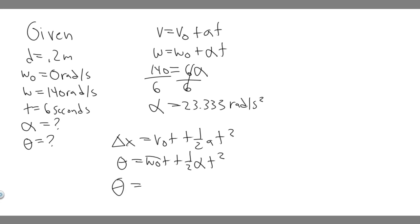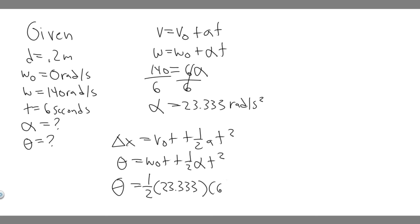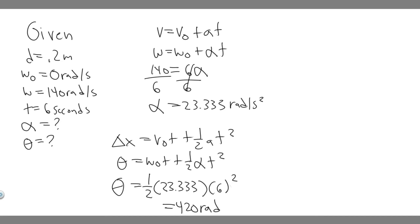Plugging in: omega-0 is 0, so 0 times 6 is 0, leaving just one-half times 23.333 times 6 squared. That's one-half times 23.333 times 36, which equals 420. The angle measurement here is in radians, because the units are radians per second squared times seconds squared — the seconds squared cancel — leaving just radians. So the angle through which the blade turns is 420 radians, and the angular acceleration is 23.333 radians per second squared.